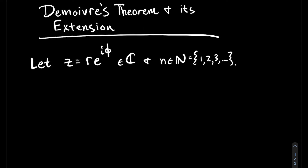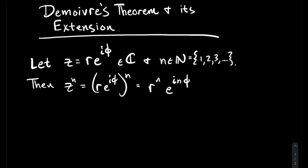My natural numbers start from 1, 2, 3, etc. So what happens when we raise z to the nth power? z to the n — if I think about exponent rules, that should be r e to the i phi, all to the n. And continuing with what I know about exponents, I can just raise each of those pieces, r and e to the i phi, to the nth power. And now I'll switch back because I know a different way to write it: e to the i n phi.